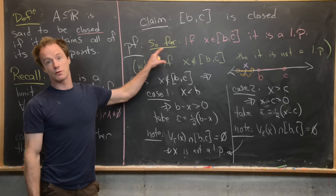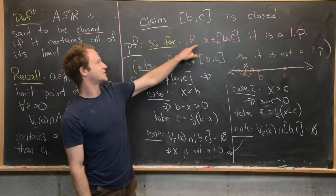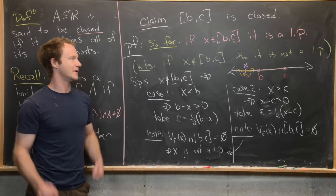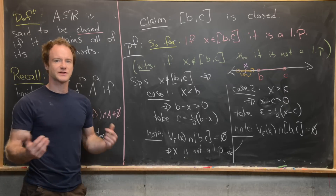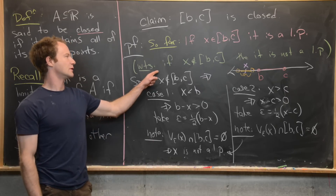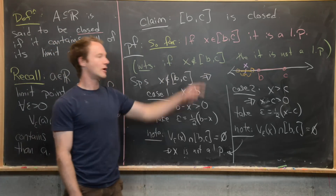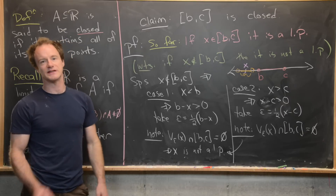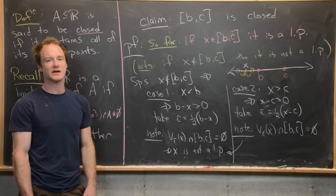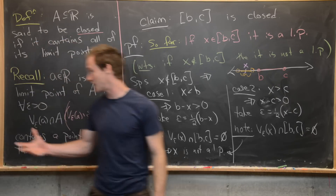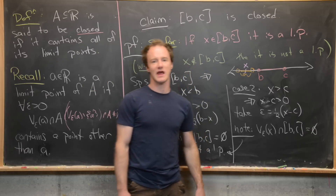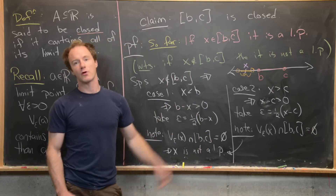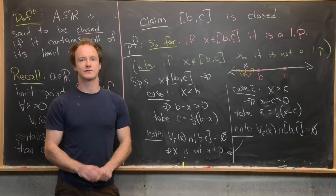To reiterate what we have done: we've shown that every element in [B,C] is a limit point of [B,C], and every element outside [B,C] is not a limit point. So the closed interval [B,C] is a closed set under the definition we introduced. Now we'll clean up the board and prove a classic result.